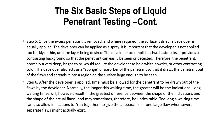Step five: once the excess penetrant is removed and where required the surface is dried, a developer is equally applied. The developer can be applied as a spray. It is important that the developer is not applied too thickly; a thin, uniform layer is desired. The developer accomplishes two basic tasks. It provides a contrasting background so that the penetrant can easily be seen or detected. Therefore, the penetrant, normally a very deep bright color, would require the developer to be a white powder or other contrasting color. The developer also acts as a sponge or absorber of the penetrant, so that it draws the penetrant out of the flaws and spreads it into a region on the surface large enough to be seen.